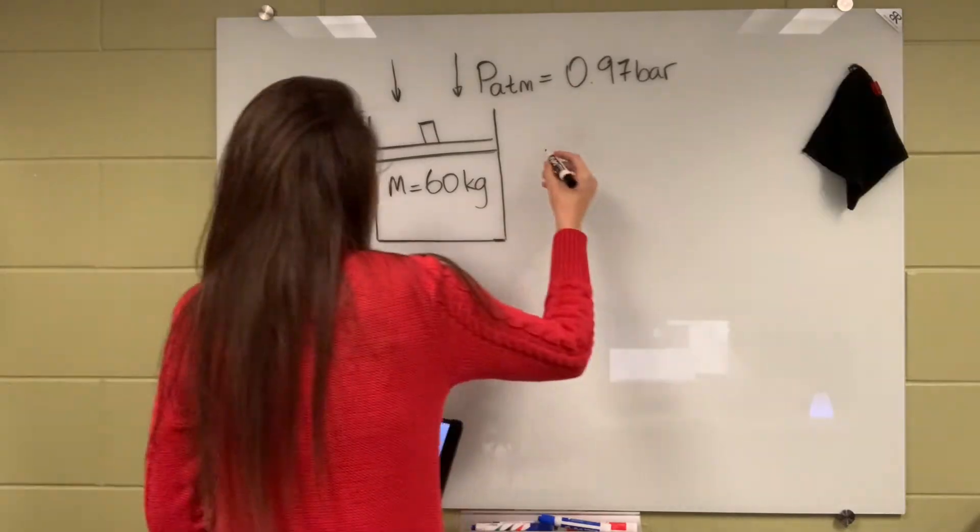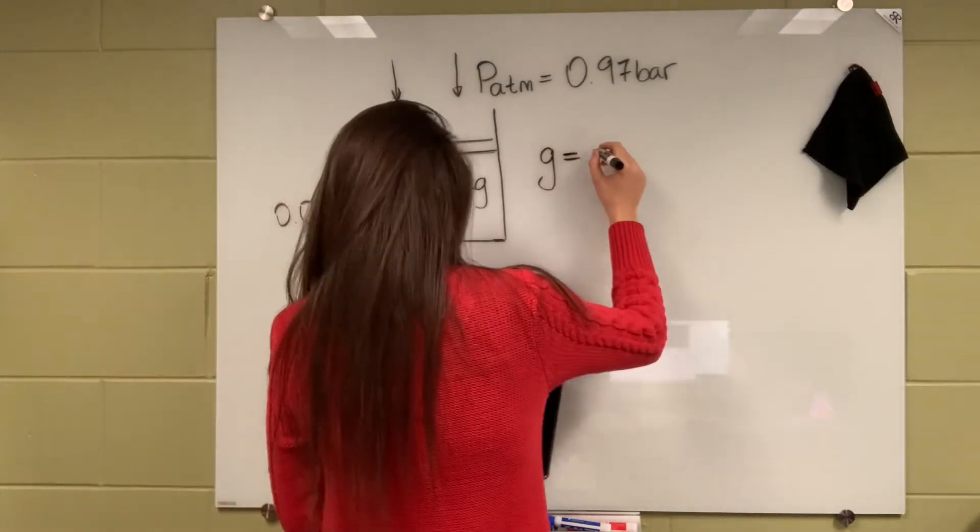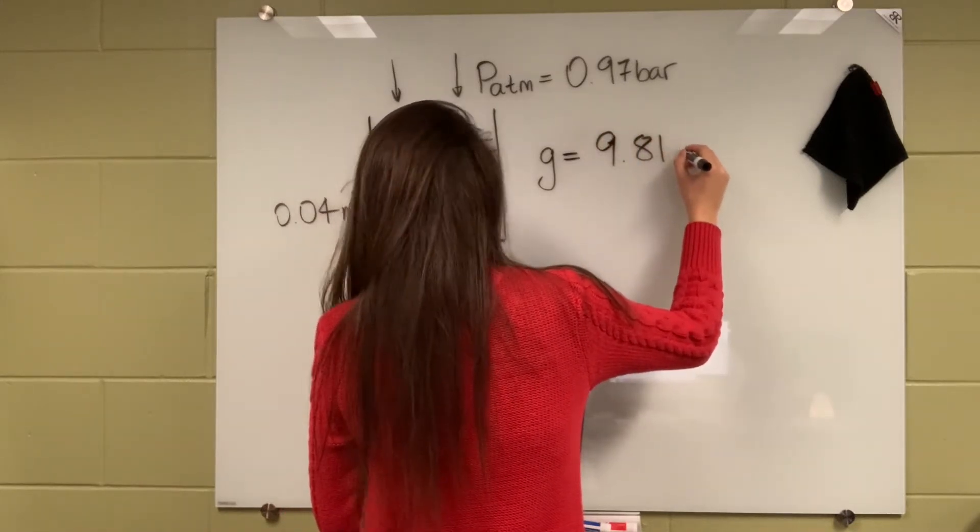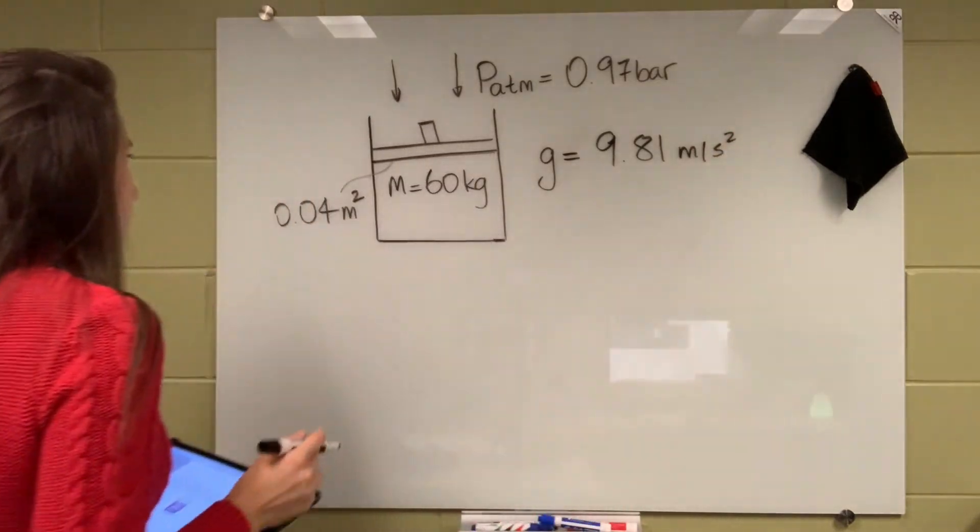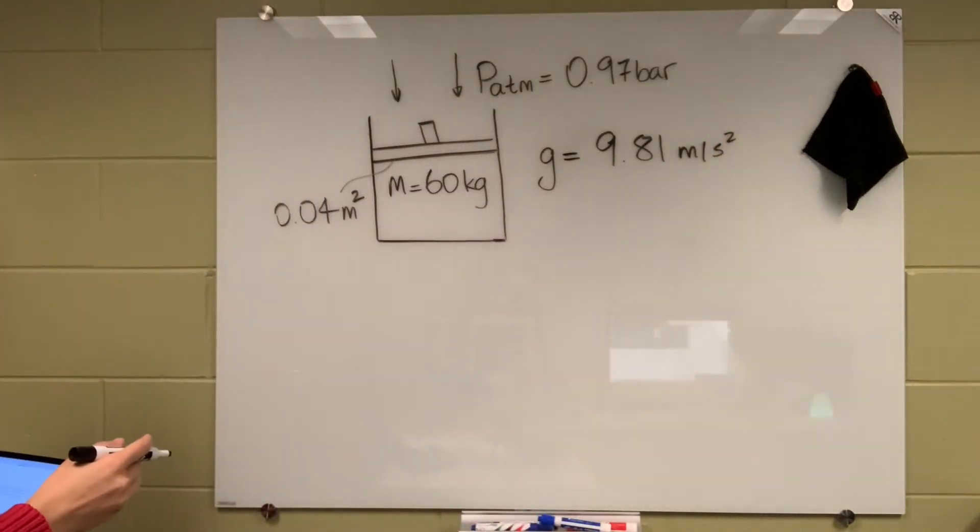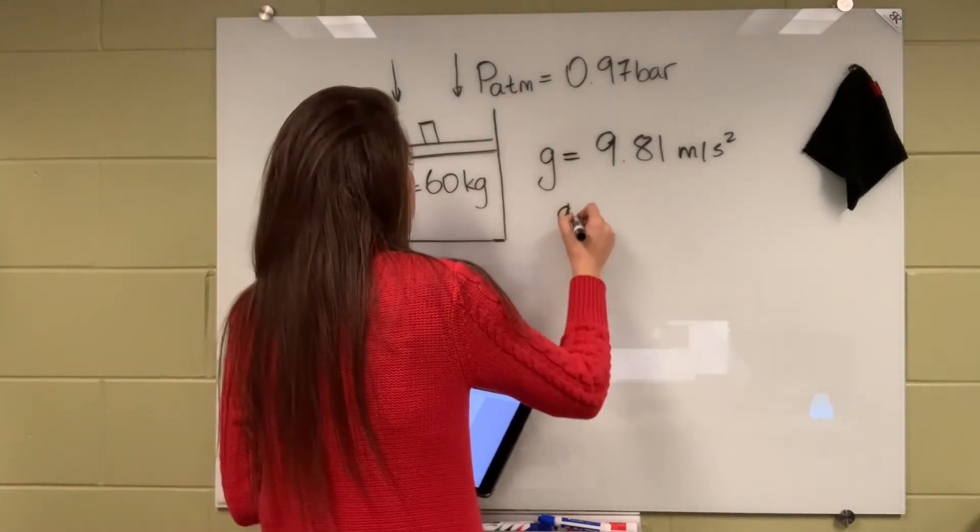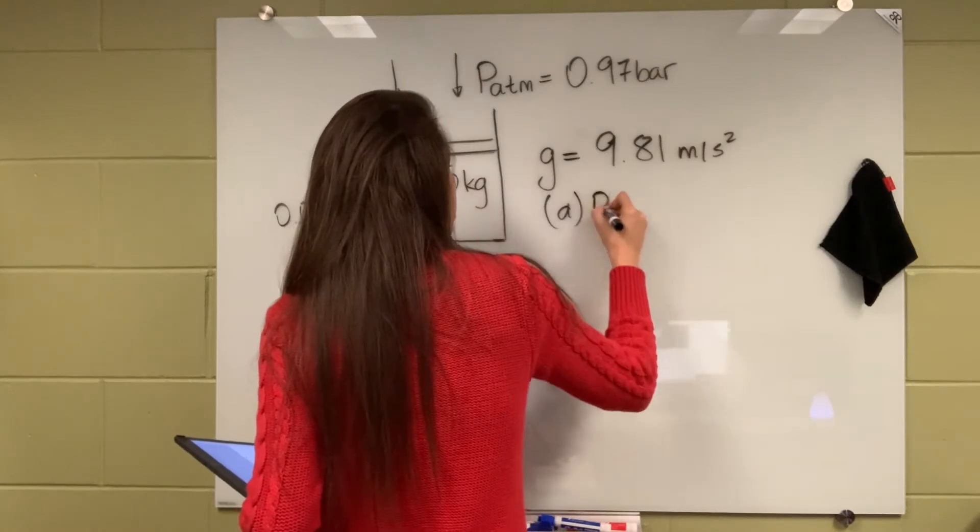The atmospheric pressure acting on the piston is 0.97 bar. The gravitational acceleration is 9.81 meters per second squared.